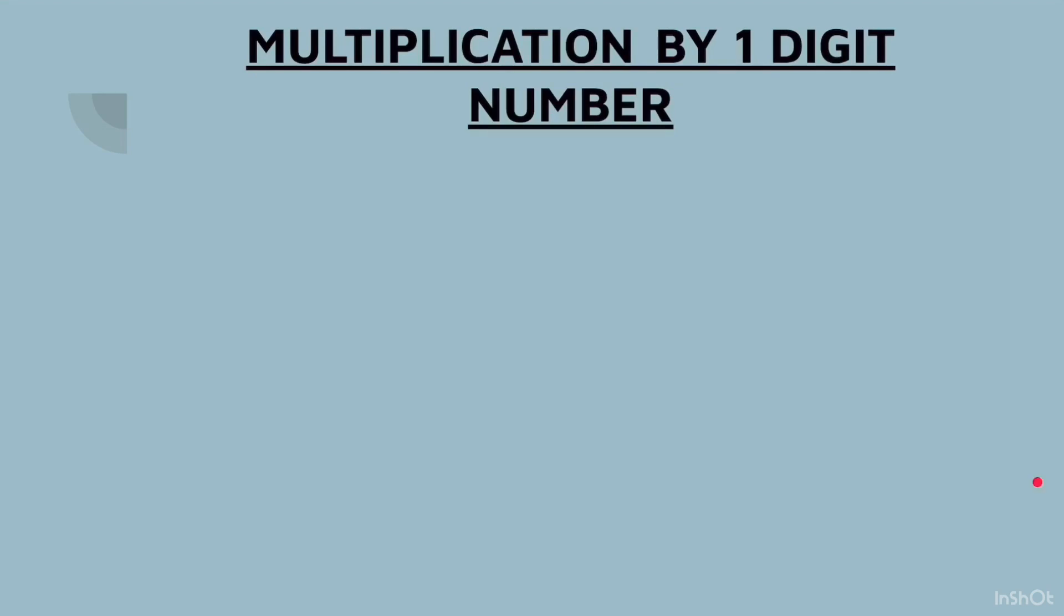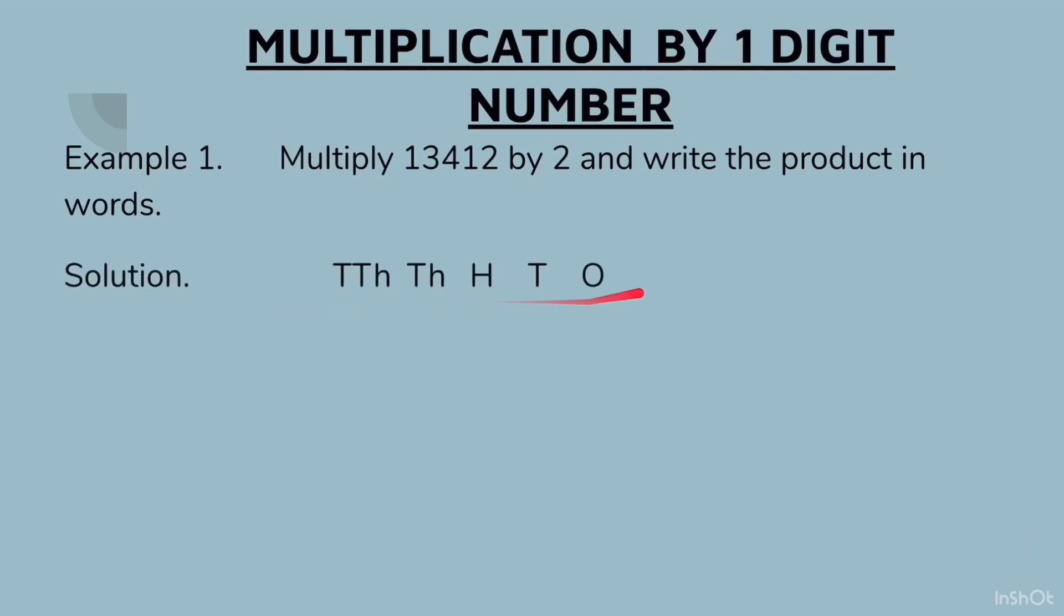Multiplication by one digit number. Example 1: Multiply 13412 by 2 and write the product in words. We will write the place values on top, then we will write the bigger number first, and after that we will write the smaller number with a multiplication sign. You could even change the order, but it is always better to write the bigger number on top, and don't forget to put this sign so that you remember you are multiplying.